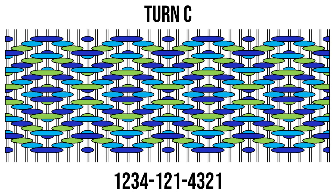For the third turning method, we'll keep going one pick further and pivot on shed 2, so to do this, treadle 1-2-3-4-1-2-1-4-3-2-1.